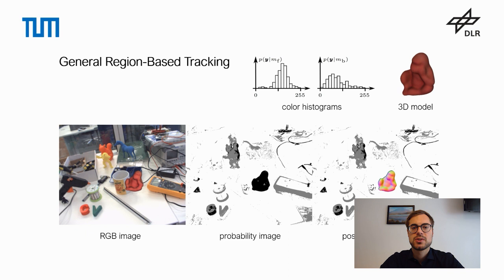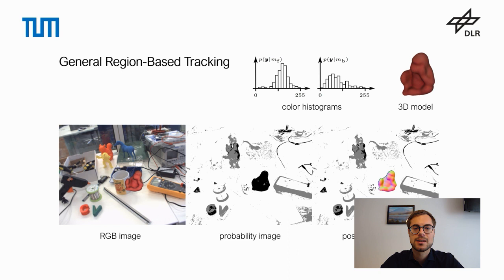Unfortunately, this optimization process is quite computationally expensive, since for each iteration of the optimization, one has to render the 3D model into the image, calculate a sign-distance function, and then, based on the distance of a pixel to the contour of the object, assign a theoretical probability to that pixel.